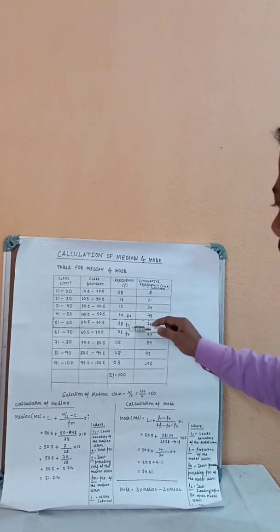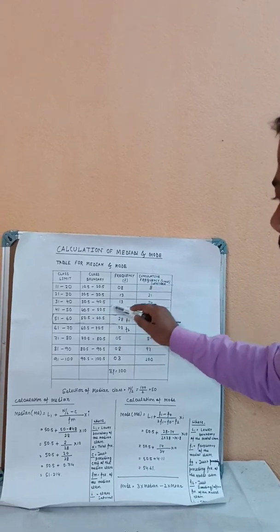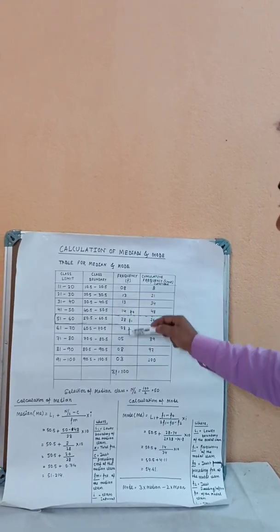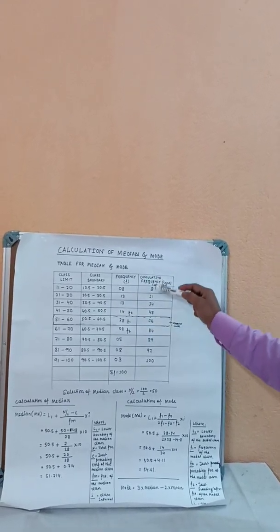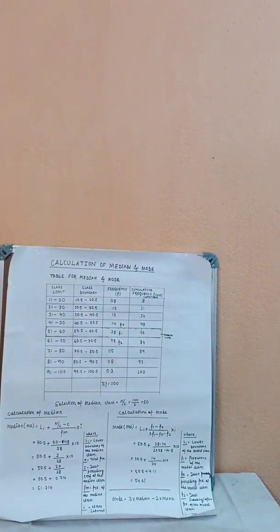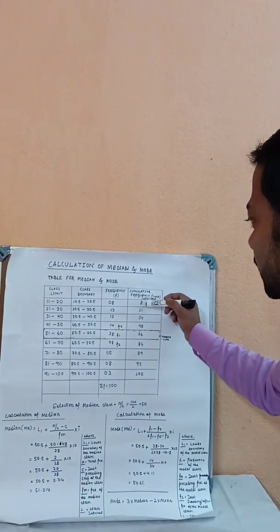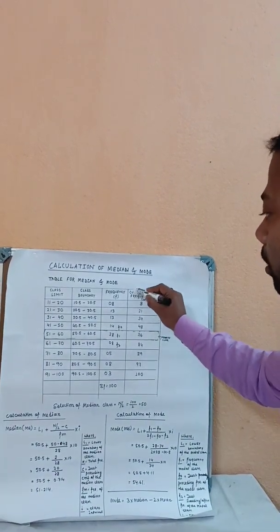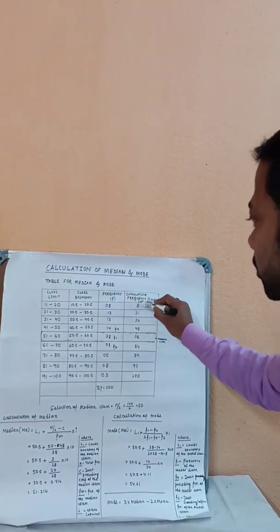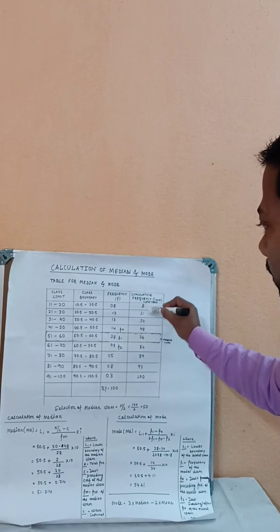This is the frequency table. The frequency column shown here represents the less-than cumulative frequency.